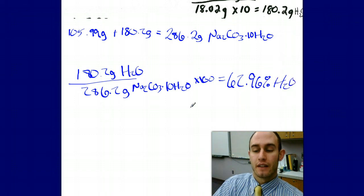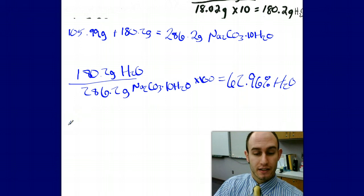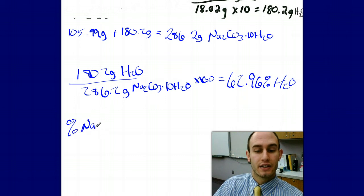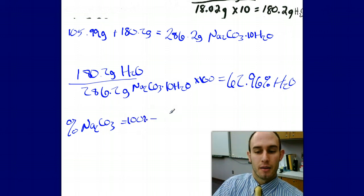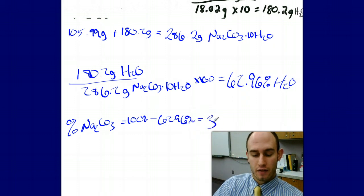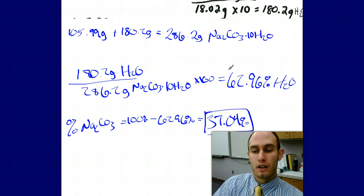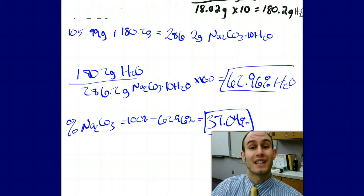And if I really needed to figure out the percentage of Na2CO3, the sodium carbonate, I know I always have 100% minus my 62.96% to give me my final answer of 37.04% of my Na2CO3. And that is how you calculate percent composition.